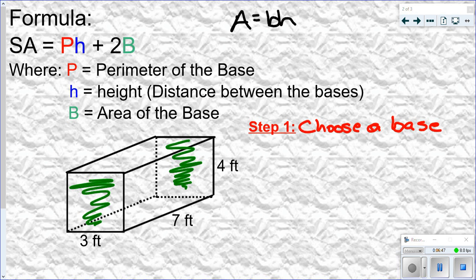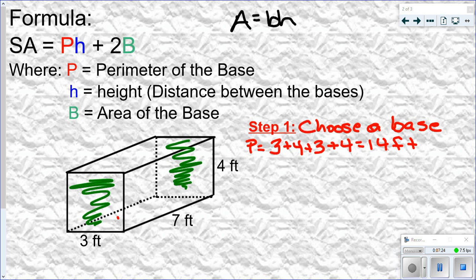Once you pick your bases, it's really not that difficult. P stands for the perimeter of the base — the distance around it. You just add up all the sides. It doesn't matter if you use the front or the back because they're identical. This side is 3, this side is 4, so the perimeter is 3 plus 4 plus 3 plus 4, which equals 14 feet. That's the perimeter of the base.